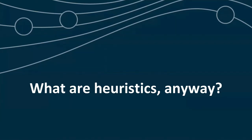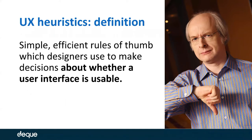The easiest way to explain what a heuristic is — a very simple way — is a general rule of thumb about something. Heuristics come from UX, from usability, from research and psychology, and they initially come from Jacob Nielsen. In the early nineties, he was working with a colleague on finding ways to evaluate the usability of software products. They came up with this idea of building heuristics for usability, and those heuristics were basically developed in 1995.